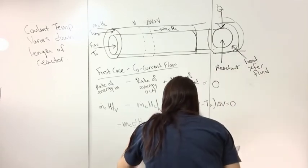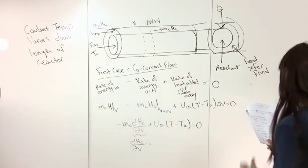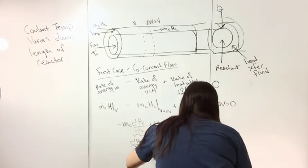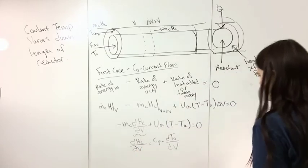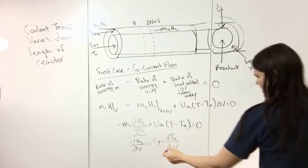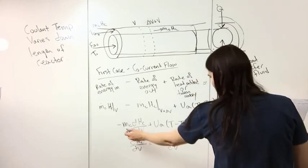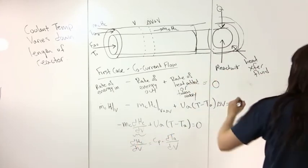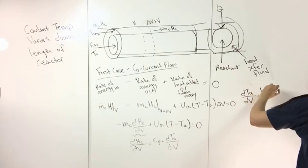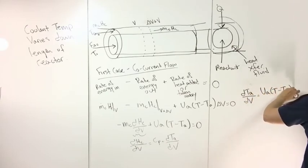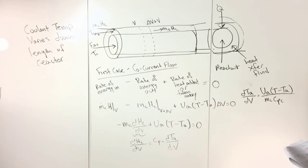We already know that the derivative of enthalpy with respect to volume is cpc dTa/dV. If we plug that in and divide through by the mass flow rate, we get dTa/dV is equal to UA(T - Ta) over mass flow rate multiplied by heat capacity.